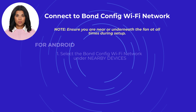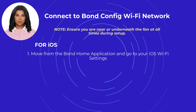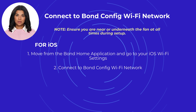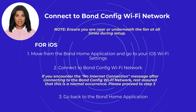Please ensure you are near or underneath the fan at all times during setup. For Android, select the Bond Config Wi-Fi network under 'Nearby Devices'. For iOS, move from the Bond Home application and go to your iOS Wi-Fi settings to connect to the Bond Config Wi-Fi network. If you encounter a 'No Internet Connection' message after connecting to the Bond Config Wi-Fi network, rest assured this is a normal occurrence. Please proceed to Step 3 and go back to the Bond Home application to continue the setup.